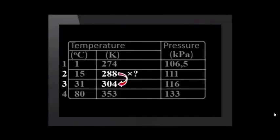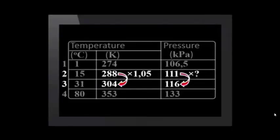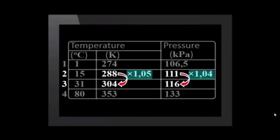Let's compare lines 2 and 3. 288 times what gives 304? 1.05. 111 times what equals 116? 1.04. This is not exactly the same as the factor by which Kelvin temperature was increased. Why not? Mr. Mashapa's learners collected this data with real equipment, not from a simulation. So, we should expect some experimental error. Let's ignore the slight difference here as experimental error.